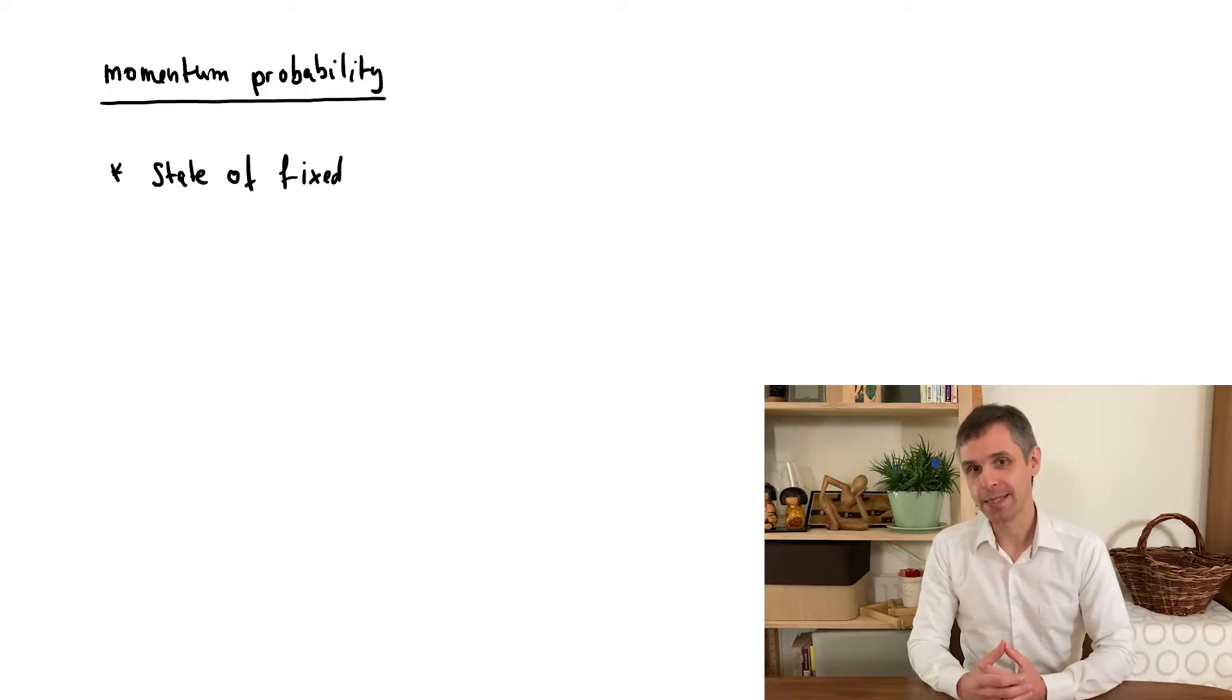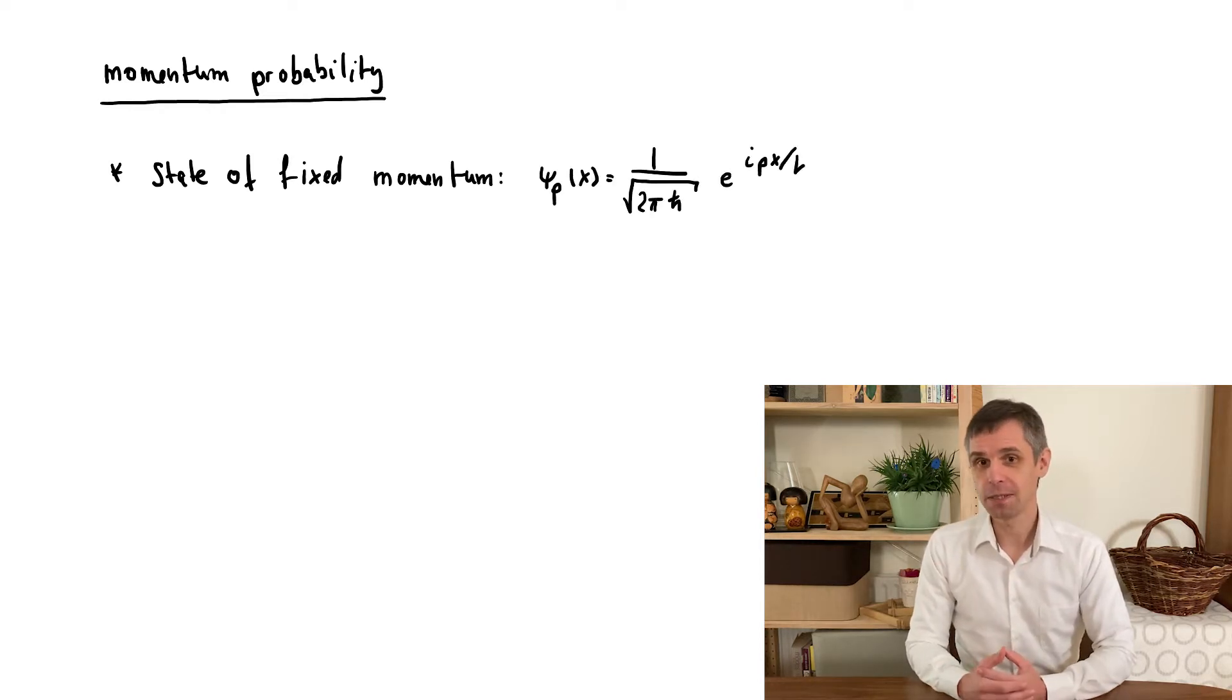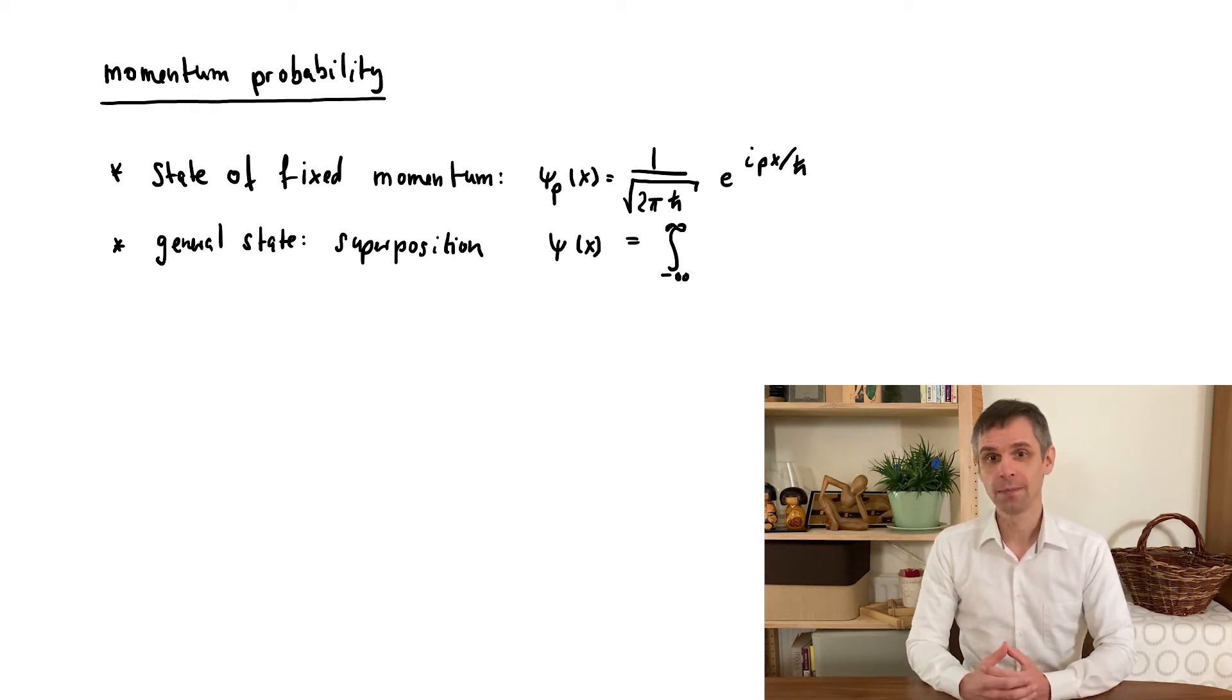Our premise was that the state of fixed momentum is a momentum eigenstate. Now it is a mathematical fact that any physical wave function can be written as a superposition of these states. That could be a sum over just a few components, but in the most general case this is an integral over all possible momenta.